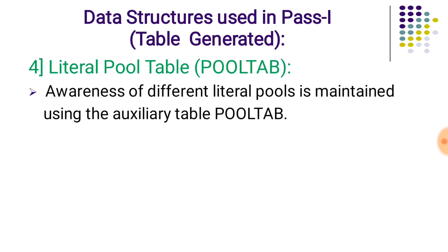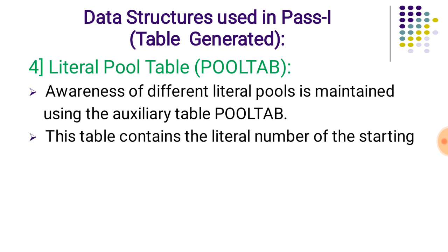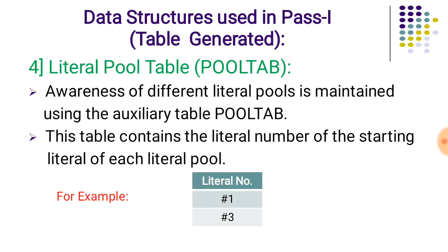The next data structure generated in pass one is the literal pool table. The literal pool table contains the literal number indicating the starting index of each literal pool. It tells how many literals are used from the start to the first LTORG or END statement. It is useful for assigning the correct literals defined in the source program, since duplicate literals are not allowed in the literal table. The literal pool table has one field — the literal number — indicating the starting number of each literal pool.